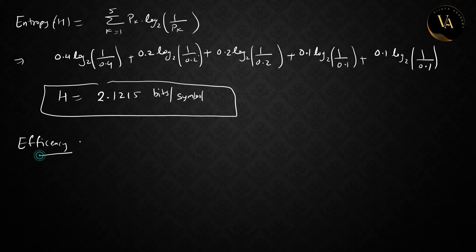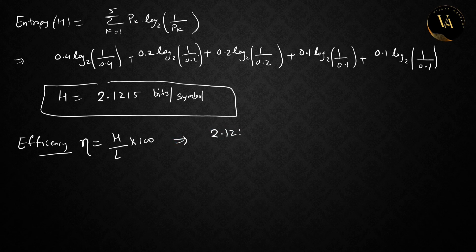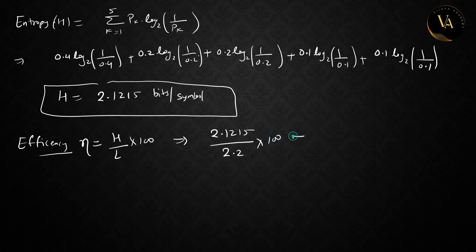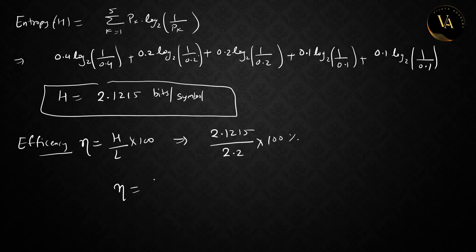To find efficiency, the formula is: efficiency η = (H / L) × 100. Entropy H ≈ 2.121 divided by average length L = 2.2, multiplied by 100. The efficiency is equal to 96.43%.